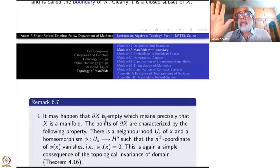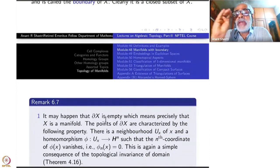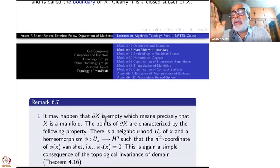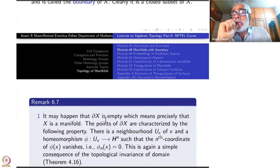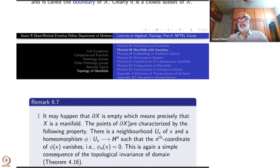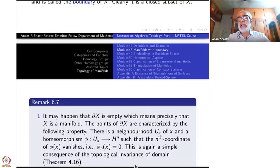It may happen that the boundary of X is empty, because all the charts may actually land inside the interior of H^n, in which case the entire X will be in the interior of X. In an ordinary topological space, the interior of X is itself, but here that is not the case. This is some other definition of interior and boundary. It can happen that the interior of X is the whole of X, in which case X will be a manifold in the old sense.